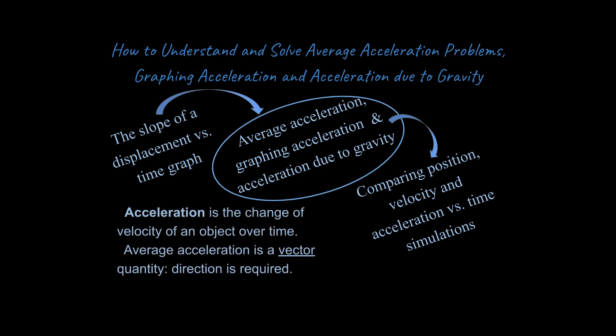So acceleration is the change of velocity of an object over time. It's a vector, so direction is required. Our basic acceleration equation is delta v over delta t. So v final minus v initial, t final minus t initial.